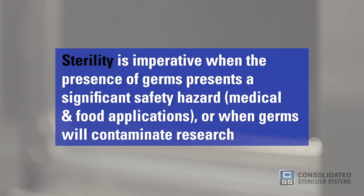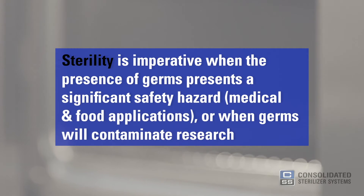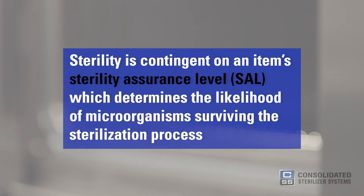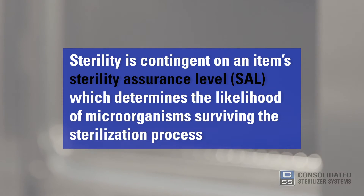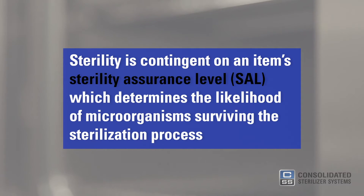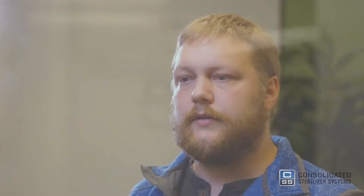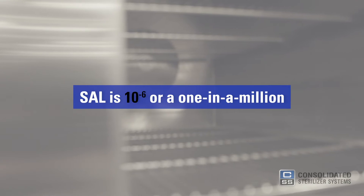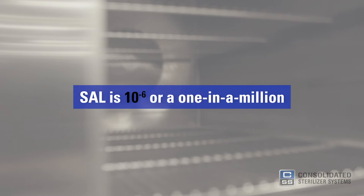Sterility is imperative in situations where the presence of germs would present a significant safety hazard — think hospitals, research laboratories, food production facilities, and so on. Sterility is contingent on an item's sterility assurance level, or SAL, which determines the likelihood of microorganisms surviving the sterilization process. The general standard for SAL is 10 to the negative 6, or a 1 in a million chance of a single viable microorganism surviving.